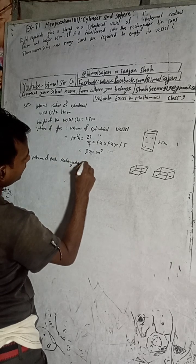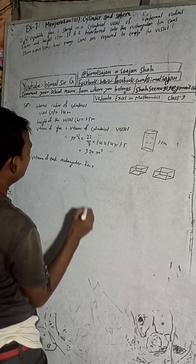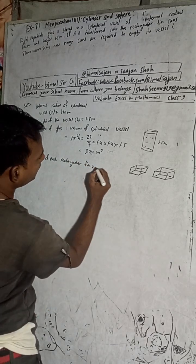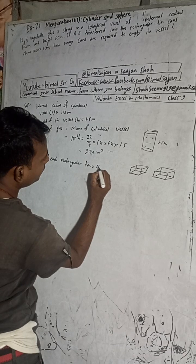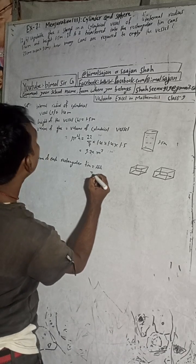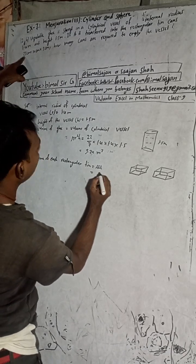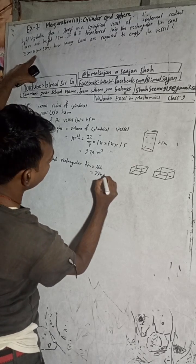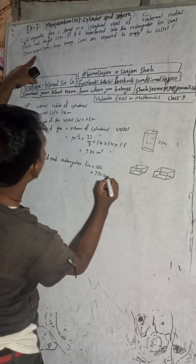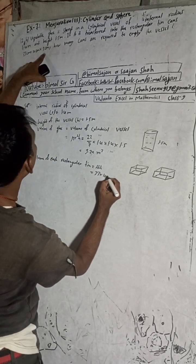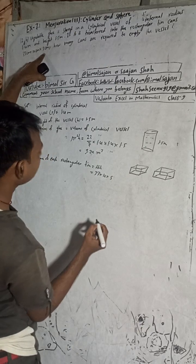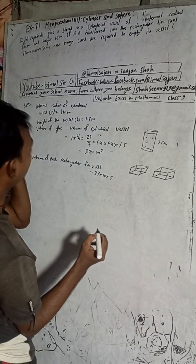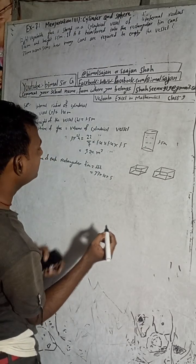Volume of each rectangular tin. Here you have to use the dimensions given: 33 cm × 10 cm × 5 cm.